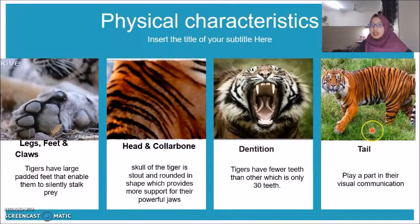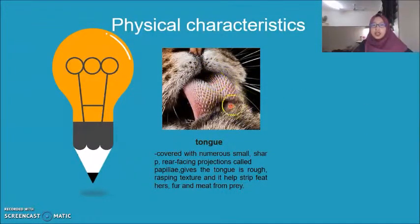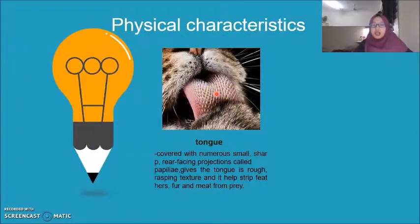The tail functions in visual communication. The tongue has papular projections that give the tongue a rough texture and help tigers to rasp flesh from the prey.